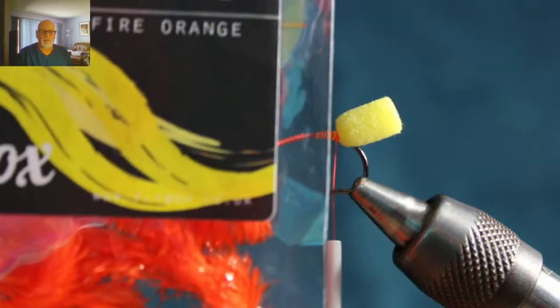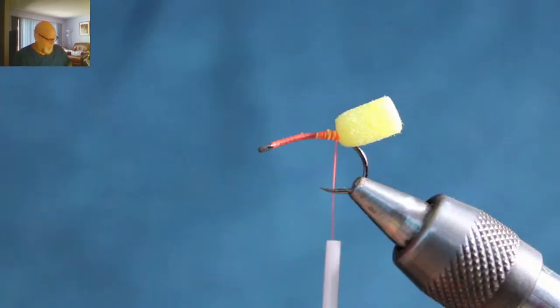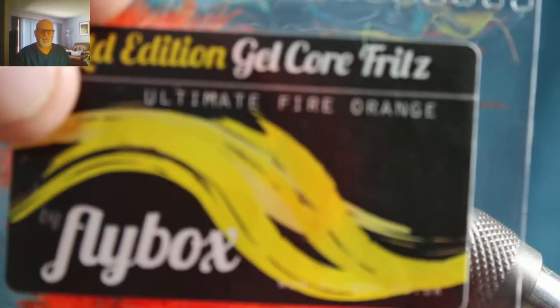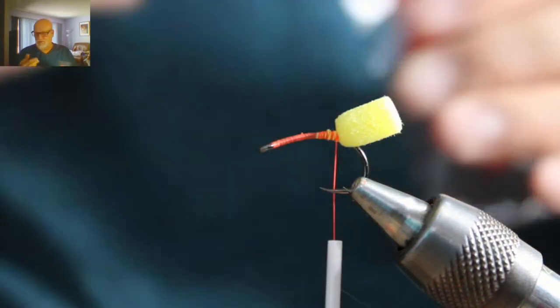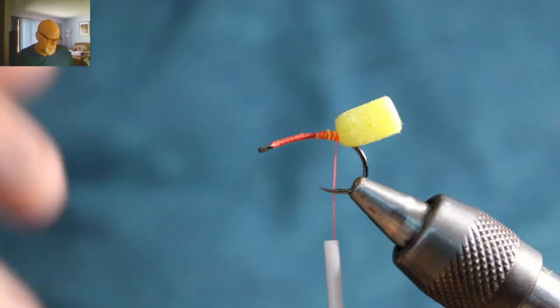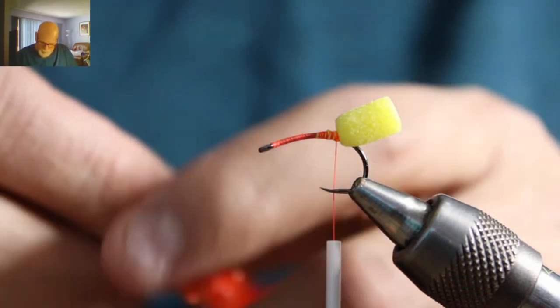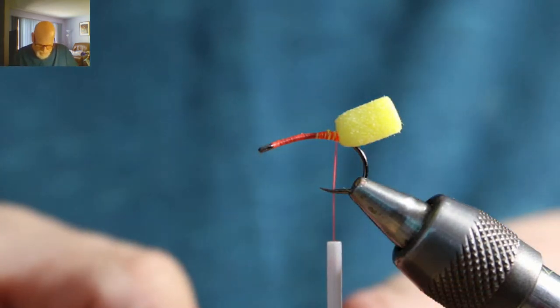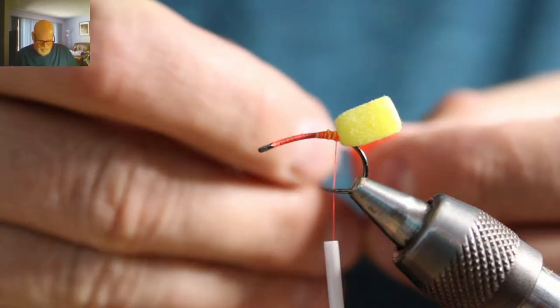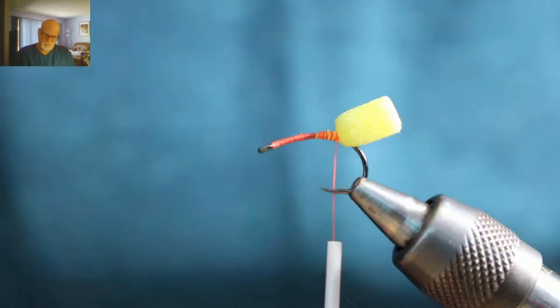They are from Fly Box, this is a fire orange gel core fritz. This is also from Fly Box. You can find this stuff all over the place. Semperfli has it. So many different companies make this now as these blobs have become more common, especially here in North America. I mean they've been common for many years in the UK, but here in North America, I wouldn't say it's a new phenomenon but within the last 10 years.